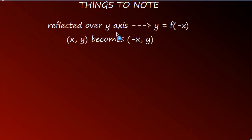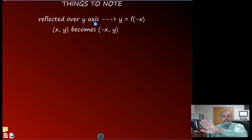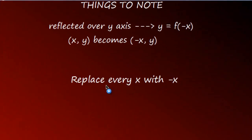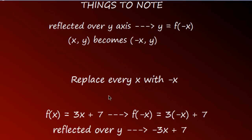To reflect over the y-axis, the y values remain the same but the x values are opposites, so we substitute negative x for every x in the function. Again with f(x) = 3x + 7, reflecting over the y-axis means going the opposite horizontal direction, so we plug in negative x to get -3x + 7. This makes sense because the y-intercept doesn't change — you still go up 7 whether you travel 3x to the right or 3x to the left.